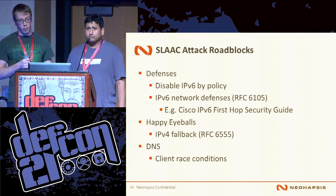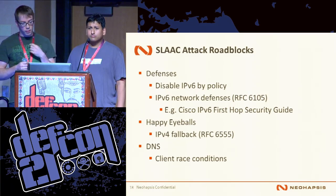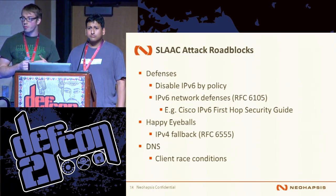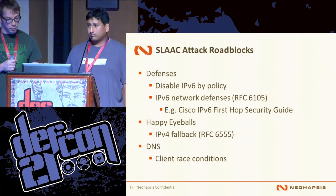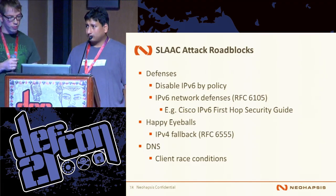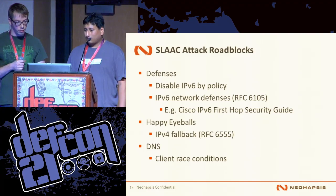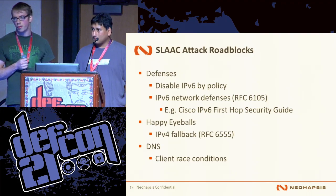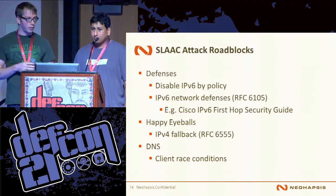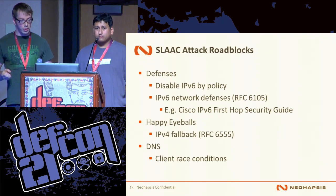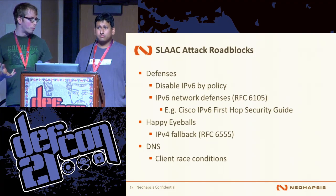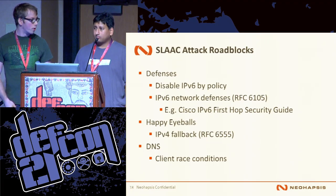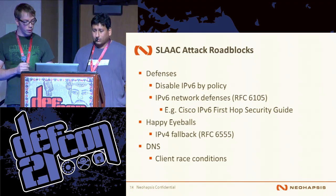One of the other things to be on the lookout for are IPv6 network defenses, specified in RFC 6105. There's also a guide that Cisco put out about protecting against first-hop attacks. They have a technology called RA Guard — Router Advertisement Guard — that basically blocks our router advertisement packet from hitting any of the other ports on the switch.